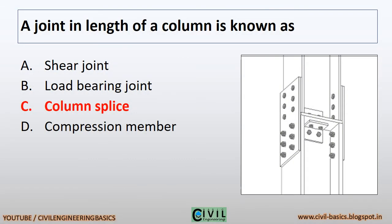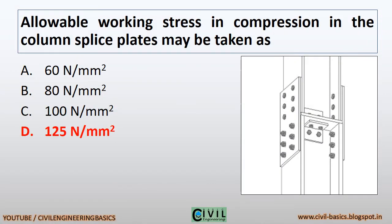A joint in the length of a column is known as a column splice. You can see the column splice in the diagram given. Allowable working stress in compression in the column splice plates may be taken as 125 N/mm².